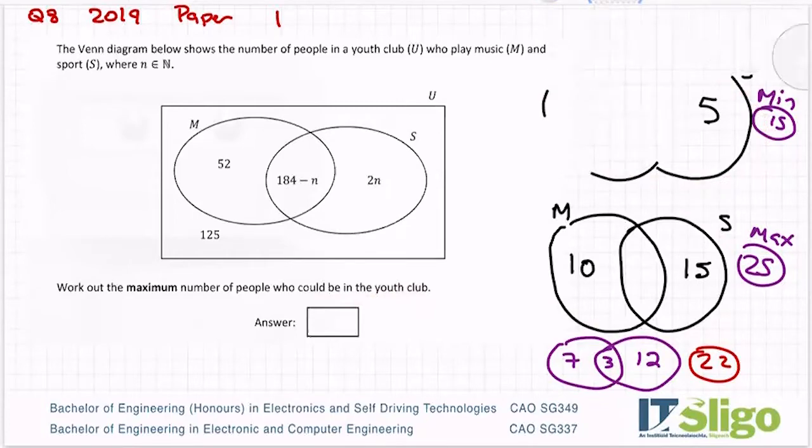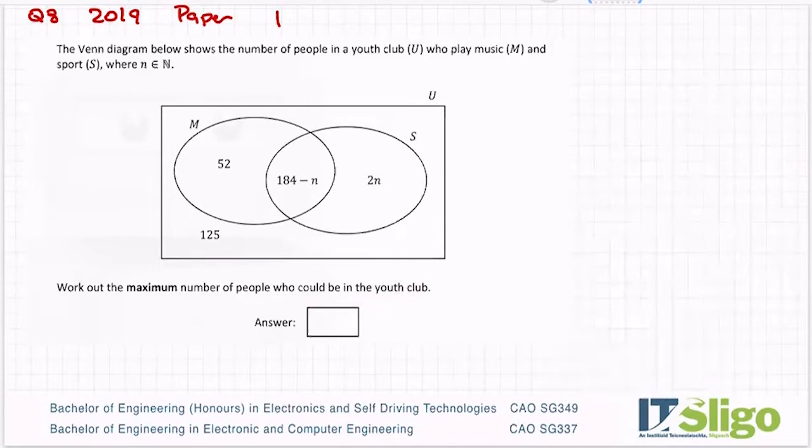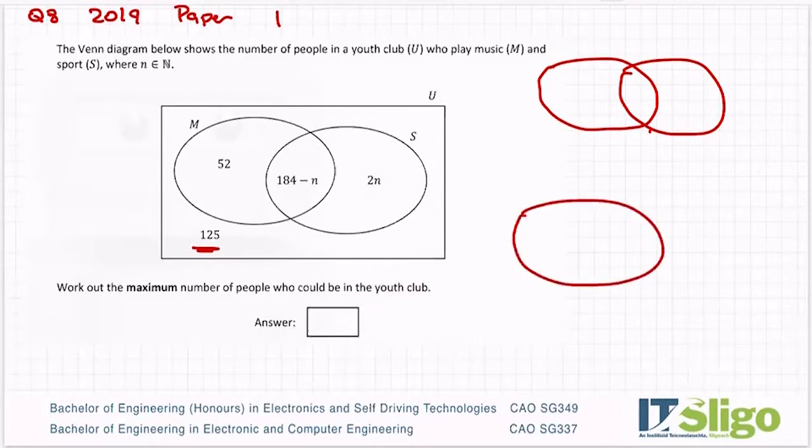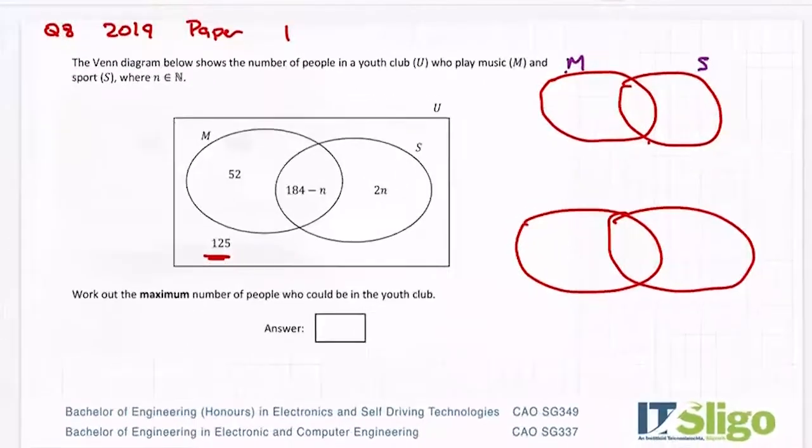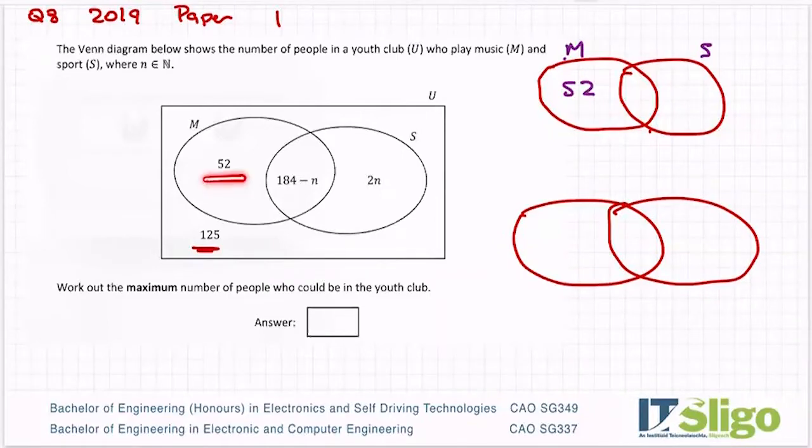What does that mean for this question? When I draw these sets, there's two options. I'm going to come back to the 125 in a minute, it's just a fixed number so it's not really part of what could change. Music and sport, so the 52 is out there. If N was the smallest number it could be, then it would be zero. So in the middle I would have 184. That's when N is zero. And then out here I would have two times zero, which is zero, so I have nothing. That's one extreme for the Venn diagram.